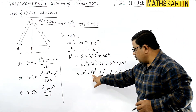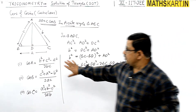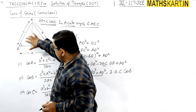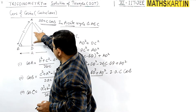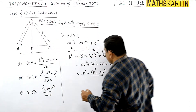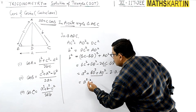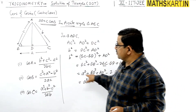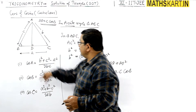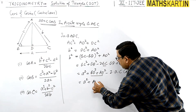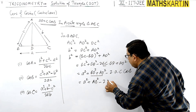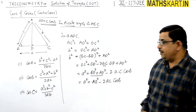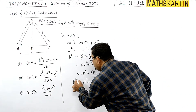Now BD² + AD² in triangle ABD equals AB², which is the small side 'c' squared — that is c². So the expression becomes: AC² = a² + c² − 2·a·c·cos B. And AC is side 'b', so b² = c² + a² − 2ac·cos B.